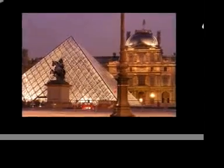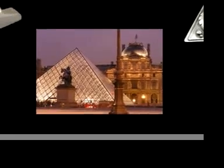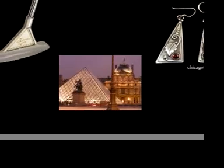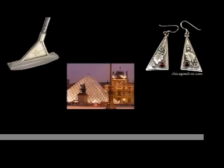Even today, right triangles can be seen around us. They are used in architecture such as the Louvre, used for recreational equipment such as golf clubs, and even such things as earrings.